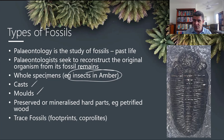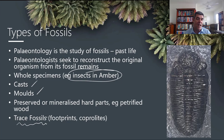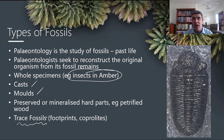Trace fossils are also very important. They're traces of life — not a fossil of the organism itself, but clues to what types of things were there. Footprints can be used to determine relative size, relative speed depending on how close they are together, and impact depending on how deep they are. Coprolites are fossilised dung, which tells us about the diet of prehistoric animals. All of these are different types of fossils with lots of different things we can examine.